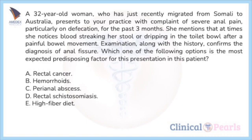Starting off with the first question: a 32-year-old woman who has just recently migrated from Somalia to Australia presents to your practice with complaint of severe anal pain, particularly on defecation, for the past three months. She mentions that at times she notices blood streaking her stool or dripping in the toilet bowl after a painful bowel movement. Examination along with the history confirms the diagnosis of anal fissure. Which one of the following options is the most expected predisposing factor for this presentation? A) rectal cancer, B) hemorrhoids, C) perianal abscess, D) rectal schistosomiasis.